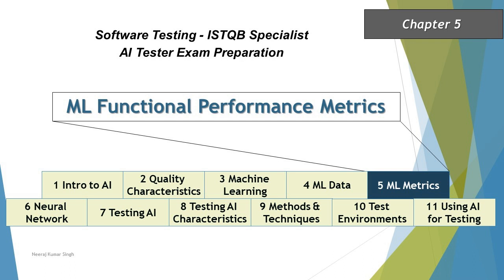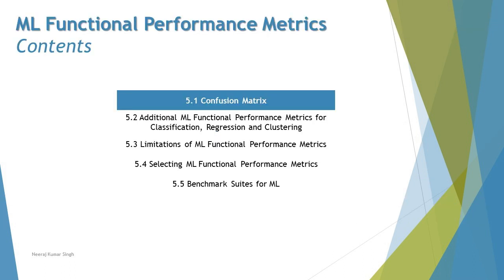Hello friends, greetings for the day. Welcome back to another tutorial on our ISTQB AI Tester Certification. We are getting started with a brand new chapter today — Chapter 5: ML Functional Performance Metrics — where we'll talk about all sorts of metrics related to the performance of an ML model or algorithm.